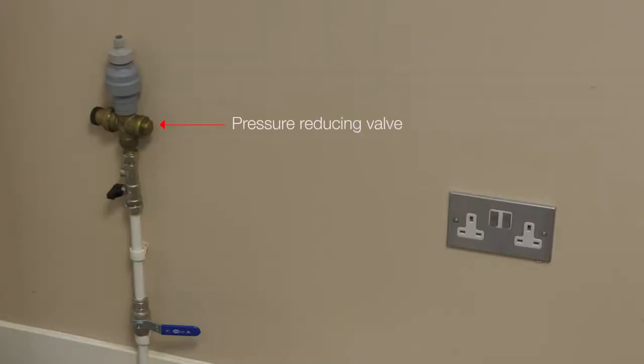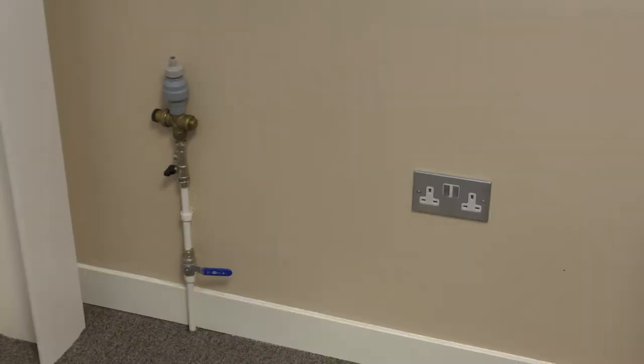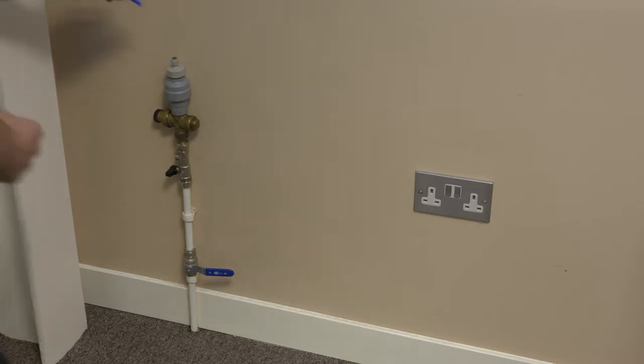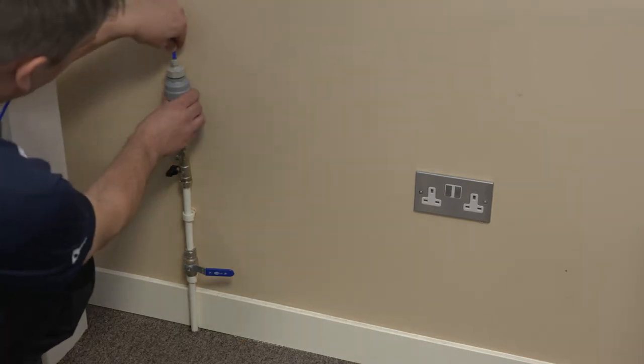A pressure reducing valve, a non-return valve and a water block should be used before the connection into the machine. Do not turn on the water supply at this point.